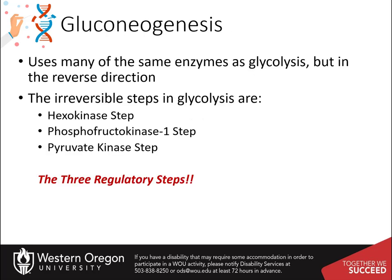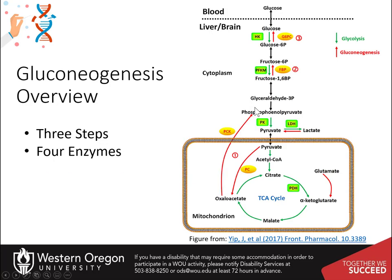The three irreversible steps of glycolysis are also the three key regulatory steps within the pathway: the hexokinase step, the phosphofructokinase I step, and the pyruvate kinase step. In this overview, the glycolytic pathway is outlined in green. The key regulatory steps that cannot be reversed during this gluconeogenic pathway, shown in red, include the pyruvate kinase step.